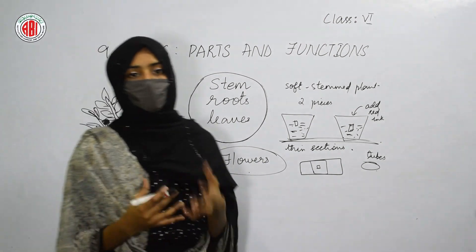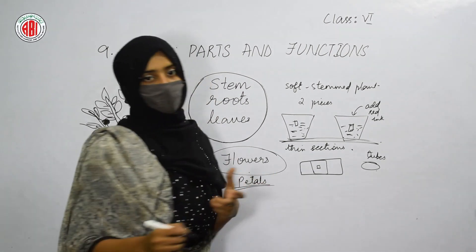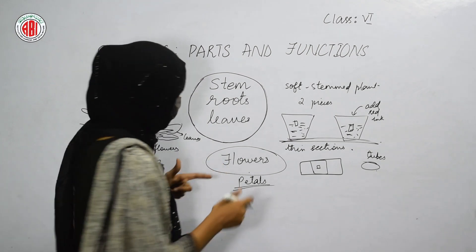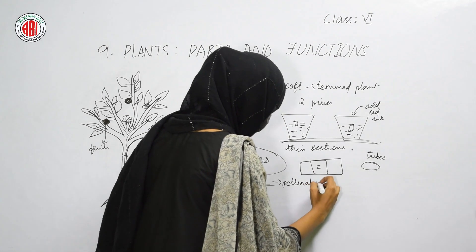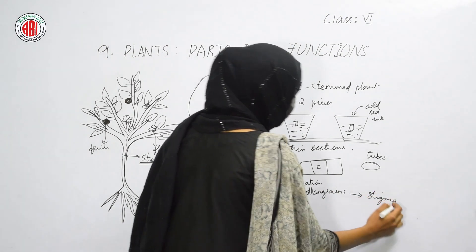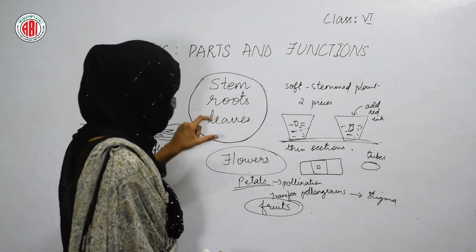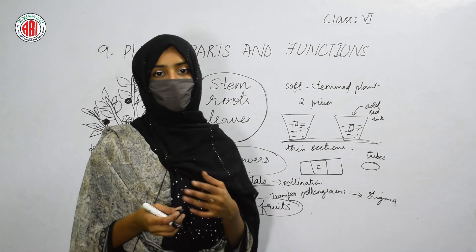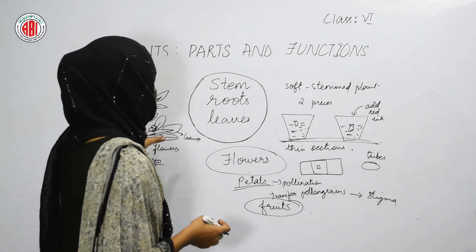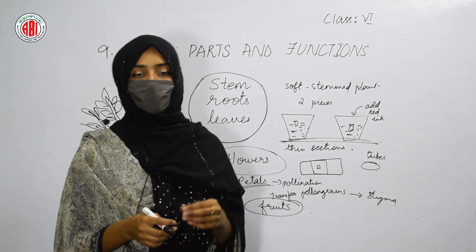Besides the stem, flowers are also an important part. Flowers are very attractive and colorful, and the colored parts of flowers are called petals. Because they are colorful, they attract insects, and these insects help carry out the process of pollination — the transfer of pollen grains to the stigma. By transferring pollen grains from one flower to the stigma of another flower, fruits can be produced. We also grow flowering plants to add beauty to nature.